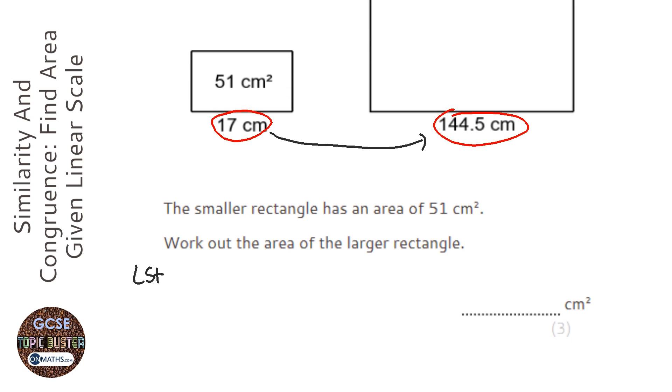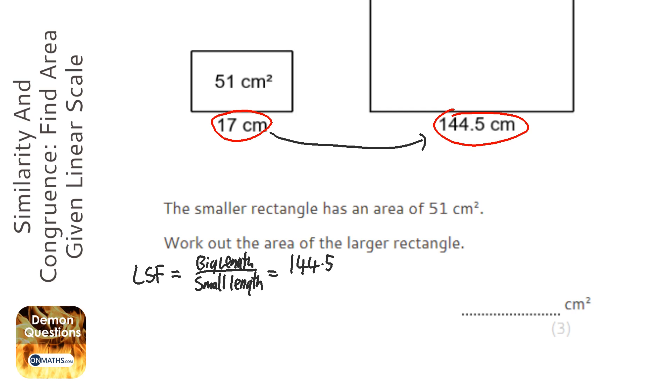And to do that, this linear scale factor is big length over small length. And they're both at the bottom of the rectangle, so it's going to be 144.5 over 17. Now the two lengths need to be corresponding, which means they're in the same location on both rectangles. So I'm going to do that and I get the answer of 8.5.